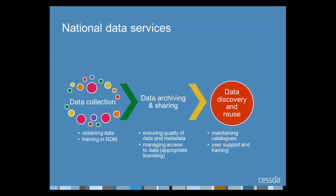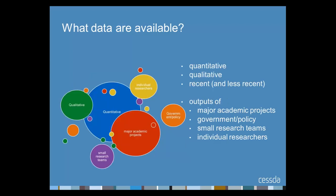Social science data archives typically combine the archiving of research data with activities to make that data available for research, teaching and learning. Core activities include checking data and metadata, maintaining catalogues and managing access to data. Many services also seek to obtain data for their collections and to develop training for both creators and users of data.